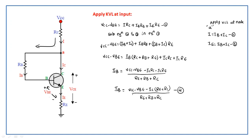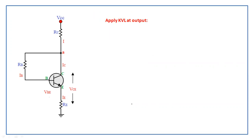Equation four is used to find the stability factor. Now we will apply KVL at the output side. This gives us the output side equation.